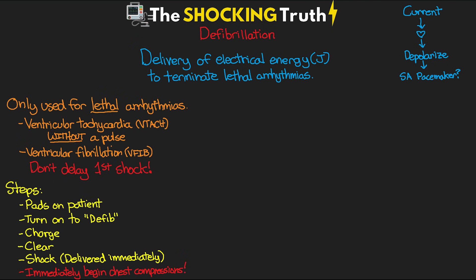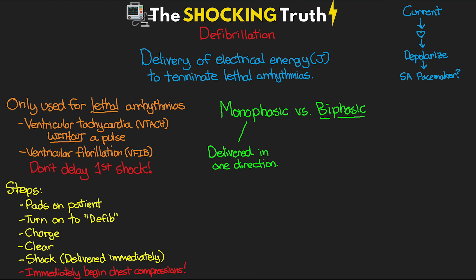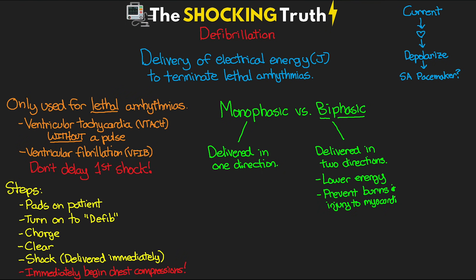You may have heard about the differences between monophasic and biphasic defibrillators. Most hospitals today are using biphasic devices. Monophasic devices — now considered old technology — delivered electricity in one direction between the pads. The biphasic device delivers the electricity one way, then switches directions and goes the other way. This biphasic delivery allows for lower energy requirements, which primarily helps prevent burns and injury to the myocardium. Studies have shown that using the biphasic approach delivers a higher chance of first shock success.